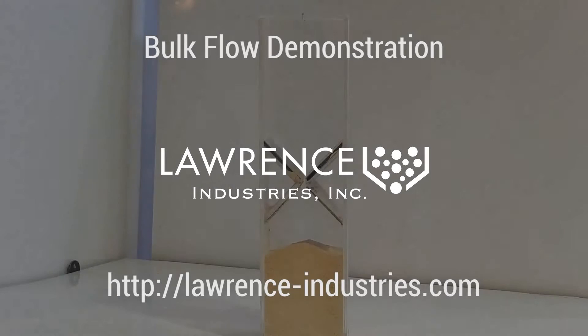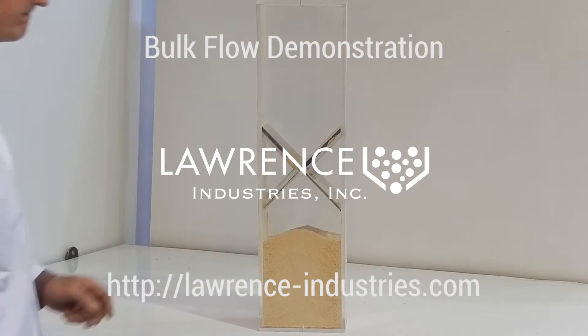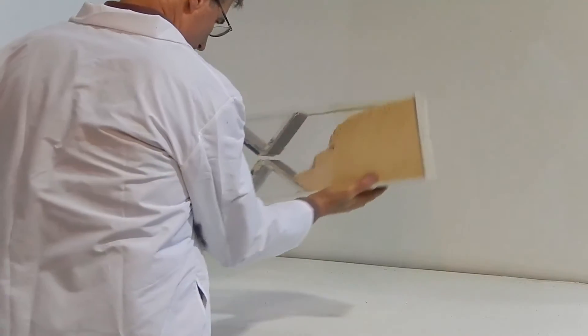This bulk material flow model demonstration is intended to show the sliding friction properties of animal feed on carbon steel and Tyvar 88 II polymer.